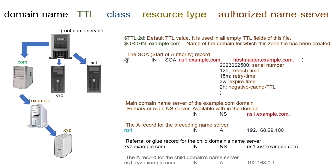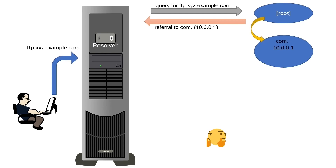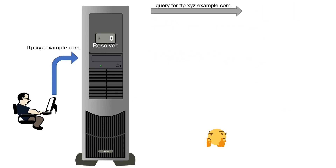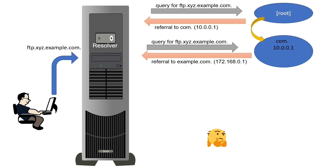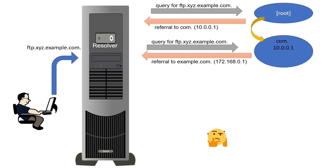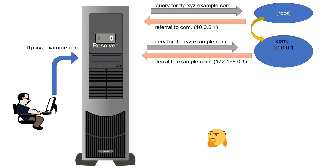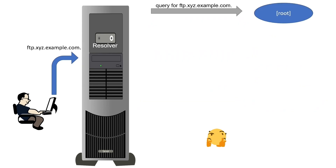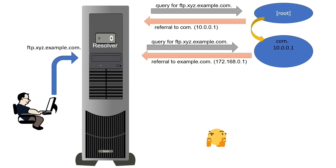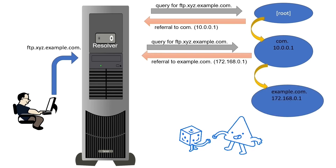Now, let us suppose the administrator forgets to add the IP address in the glue record of XYZ.example.com in the zone file of example.com. In this situation, the example name server will provide a referral to the XYZ name server without its IP address. Since the resolver system does not know the IP address of the XYZ name server, it has to resolve this name first and follows the same steps. Since the resolver system can get the XYZ name server's IP address only from the example name server and the example name server does not provide it, the resolver system will keep repeating this process, creating an infinite loop of queries.